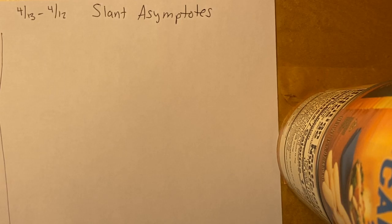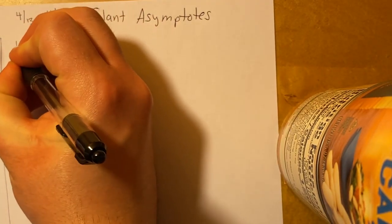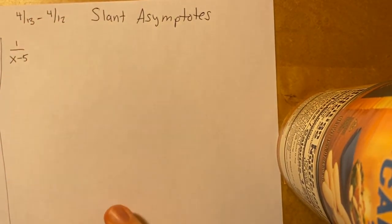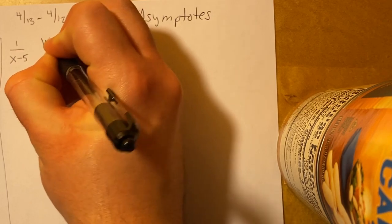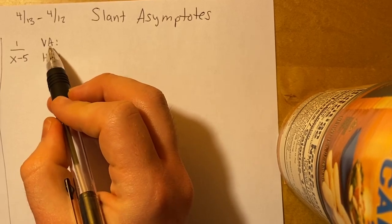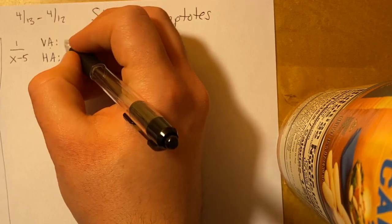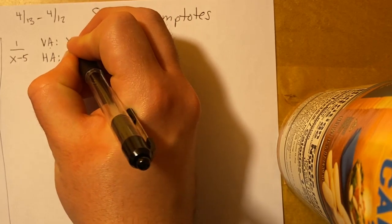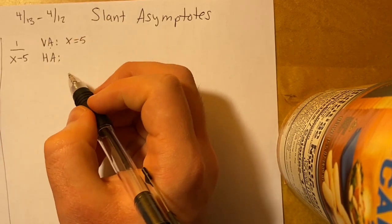All right, so to talk more about asymptotes, we're going to look at some graphs. The first graph we're going to look at is 1 over x minus 5. Now to figure out what this graph looks like, we'll have to look at the vertical asymptote VA and the horizontal asymptote HA. So for the vertical asymptote, I notice that in the denominator I have an x minus 5, which means there's a vertical asymptote at x equals 5, where the denominator would be equal to 0.